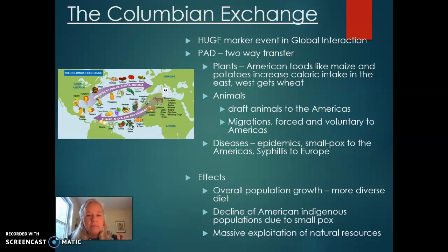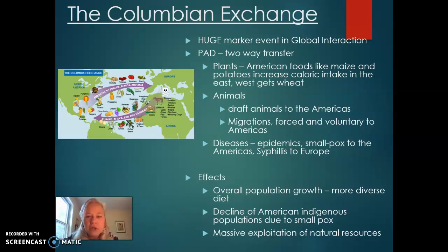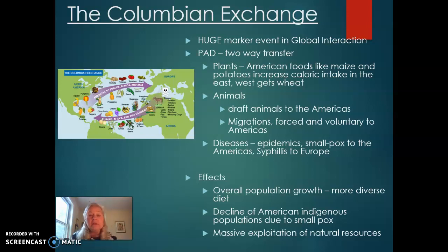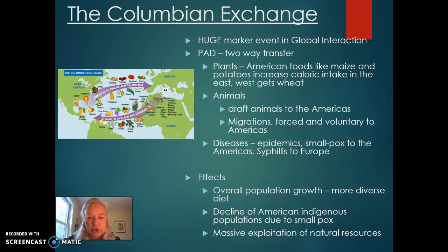Plants: maize, corn, and potatoes grew in the Americas and headed over to Afro-Eurasia, increasing the caloric intake of people there. Going the other direction, consider North America — we have so many wheat fields, but there was no wheat in North or South America before the Columbian Exchange.